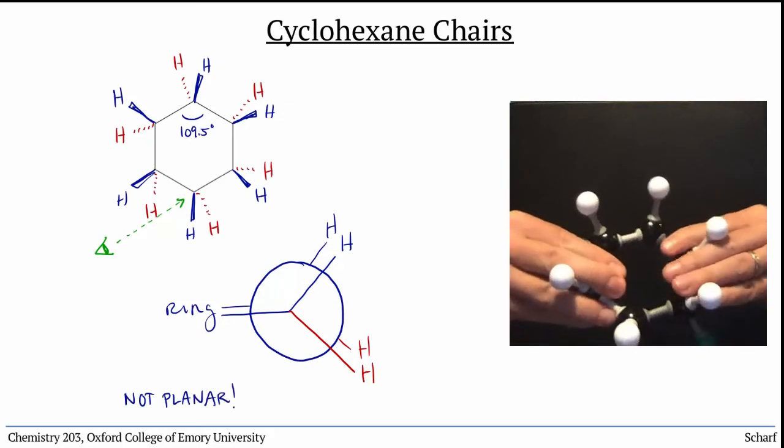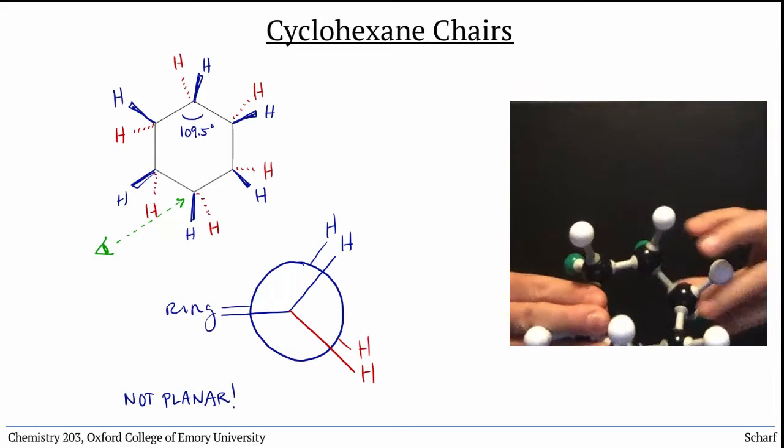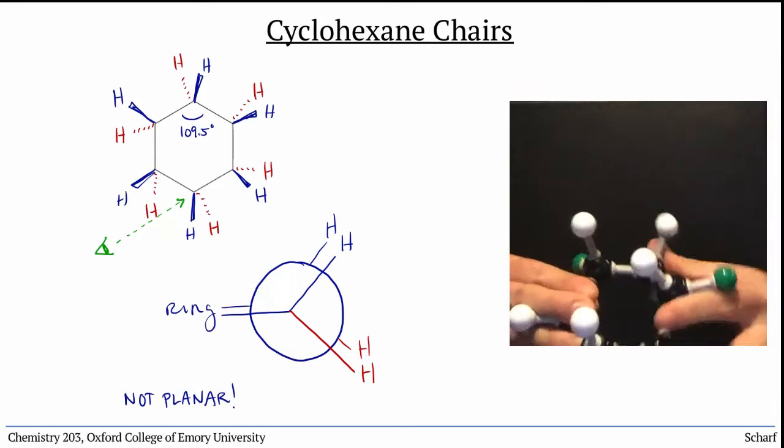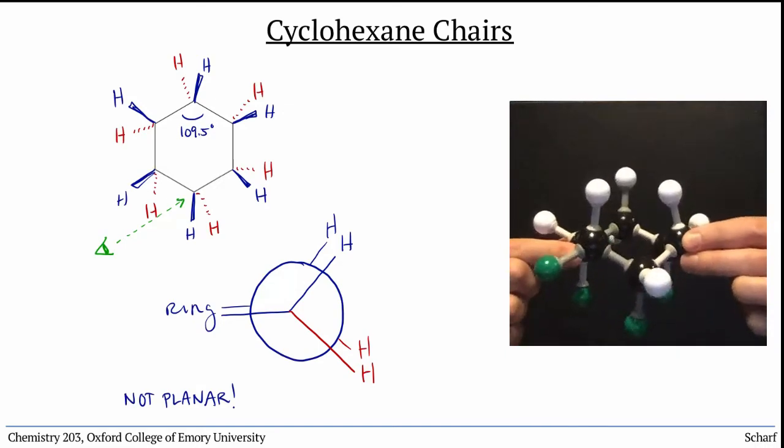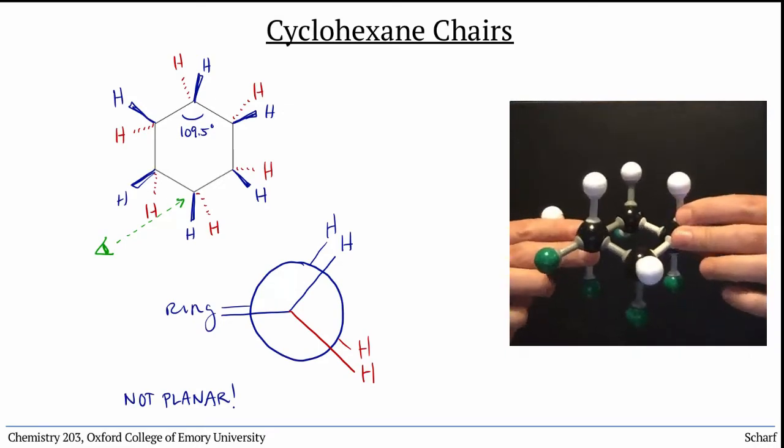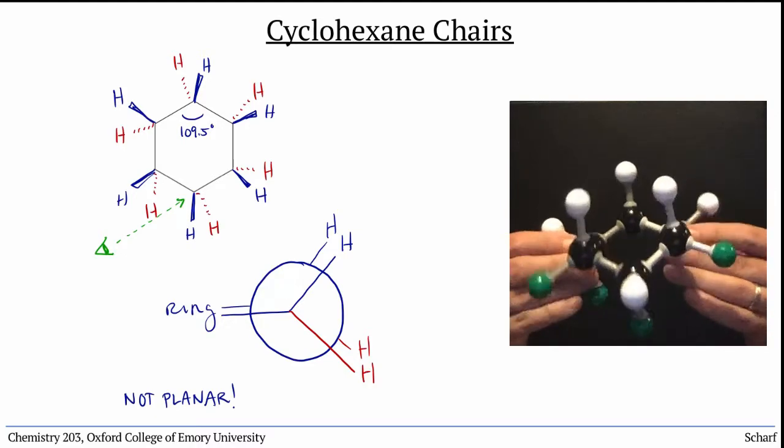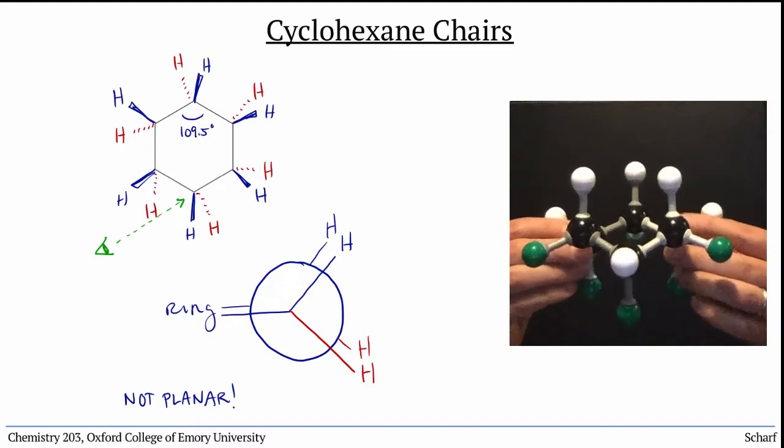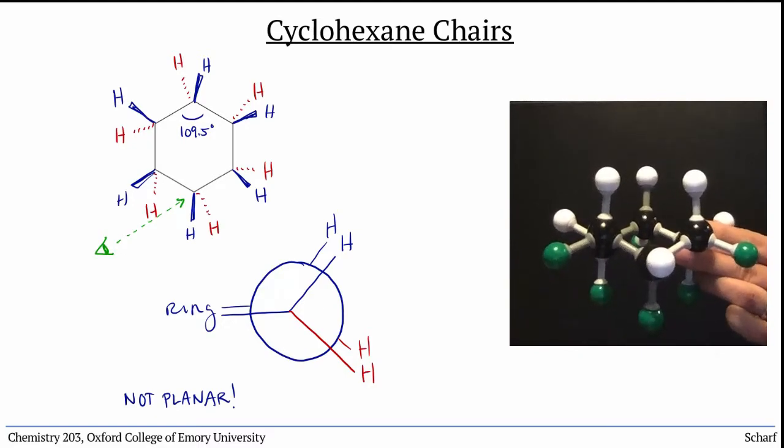They rotate their CC bonds just slightly to make all of their substituents staggered and as far apart as possible. We call this most stable conformation the chair conformation because it looks vaguely like a beach chair if you're looking at it from the proper perspective.